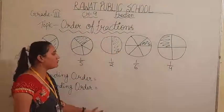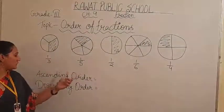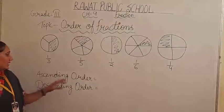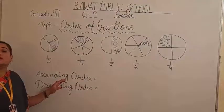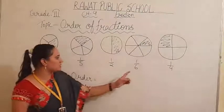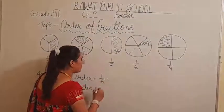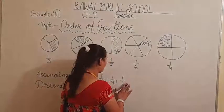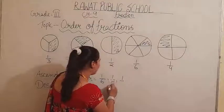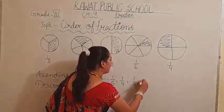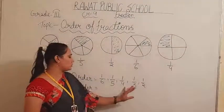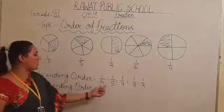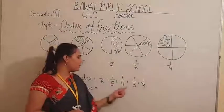Now we have to arrange these different fractions in ascending order as well as in descending order. In ascending order, we have to write the biggest number first. So which one is the biggest? 1 by 6 is the biggest number. So: 1 by 6, after that 1 by 5, after that 1 by 4, 1 by 3, and 1 by 2. In ascending order, 6 is the biggest denominator out of all numbers.